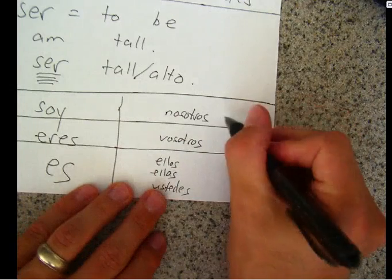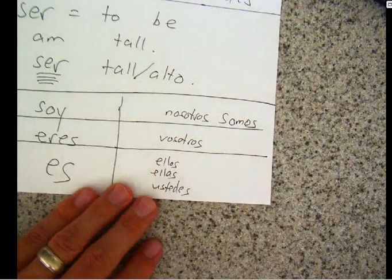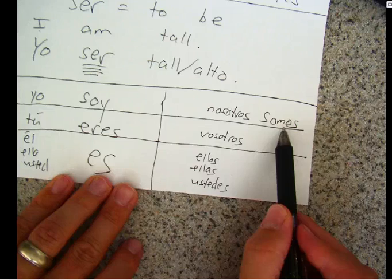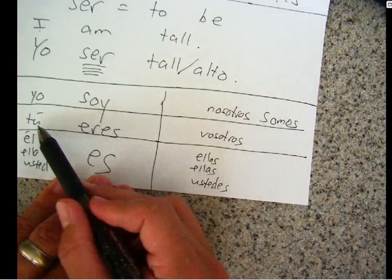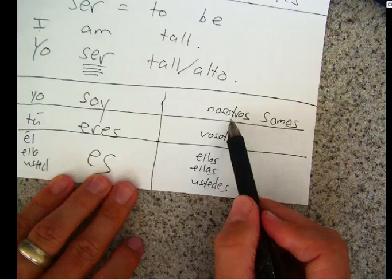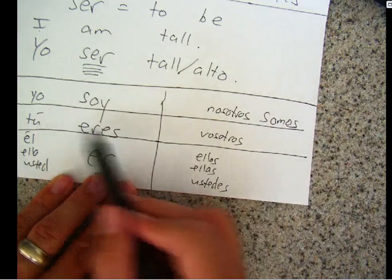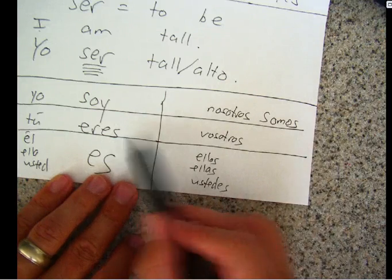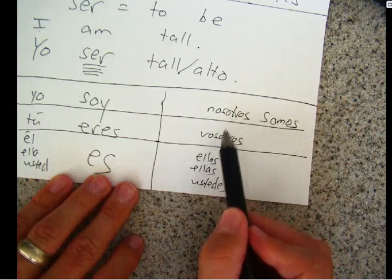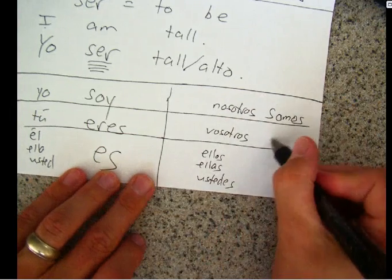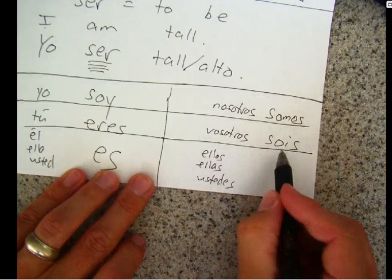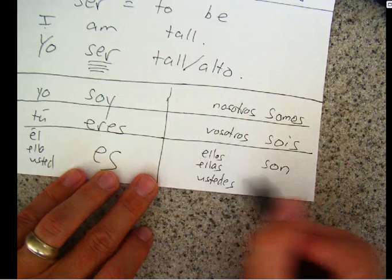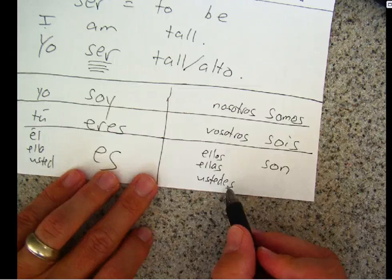Nosotros is somos — that's we are. Vosotros is sois — that's you plural are. And then they are would be son. Ellos son, ellas son, or ustedes son. So yes, there are lots of different ways of saying are, but it depends on which one goes with the right subject pronoun.